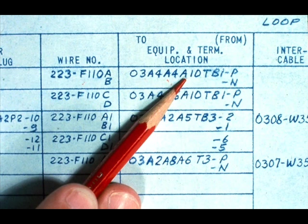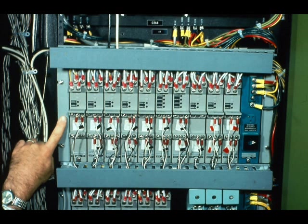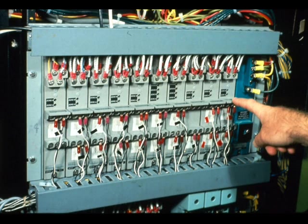Next, A10 means F110 is located at the 10th unit horizontally to the right in row 4. So, we start here with the count. This is number 1. This is number 10 unit. We are now located at O3-A4-A4-A10.